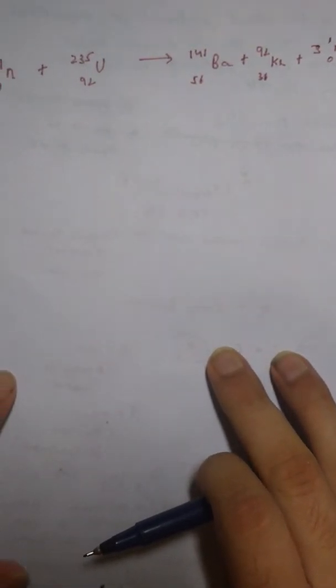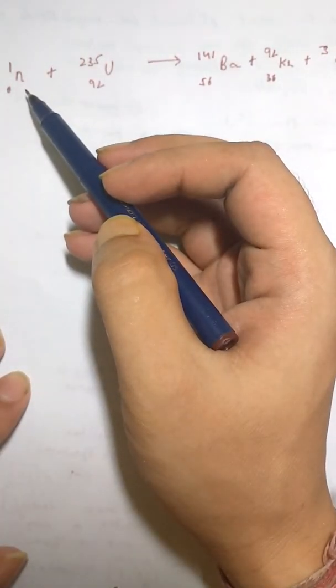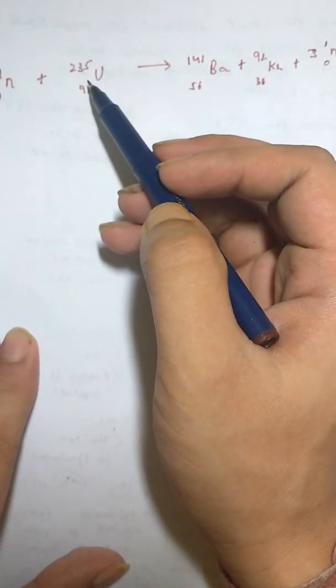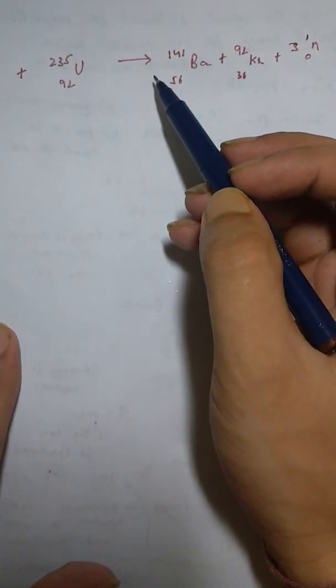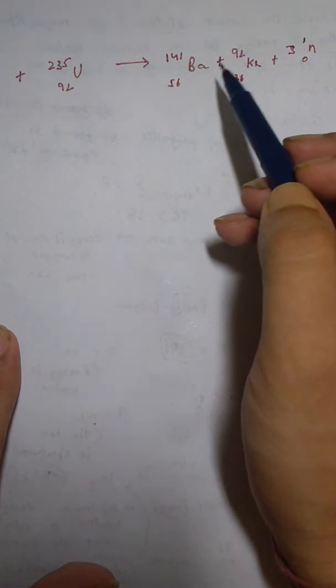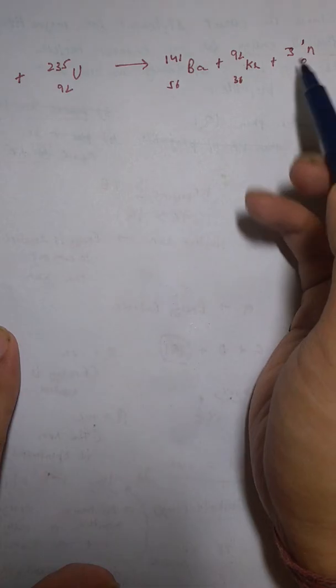First of all, the reaction for uranium is given by: one neutron when it reacts with this uranium isotope U-235 gives Ba-141 and Kr-92 and three neutrons.